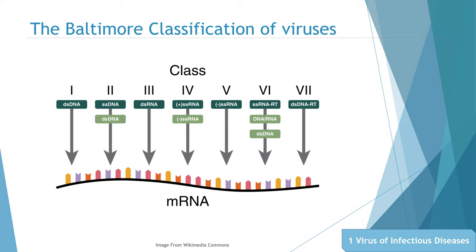Viral genomes may be single-stranded or double-stranded, RNA or DNA, and may or may not use reverse transcriptase. In addition, ssRNA viruses may be either sense or antisense. The Nobel Prize winner biologist David Baltimore devised the Baltimore classification system. The Baltimore classification of viruses is based on the mechanism of mRNA production, which places viruses into seven groups.